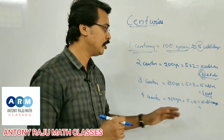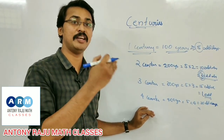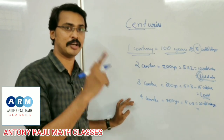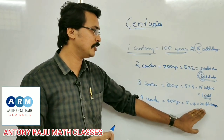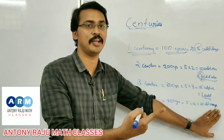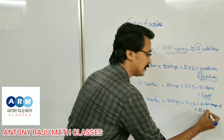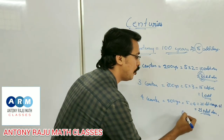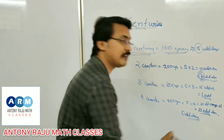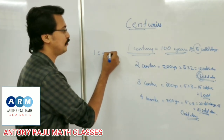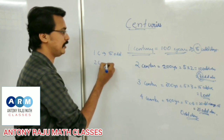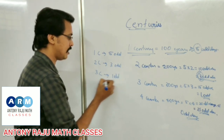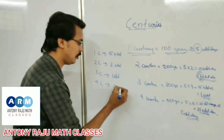For 400 years: 5 into 4 is 20 odd days, plus 1 extra day from the additional leap year gives 21 odd days. 21 is divisible by 7, so the remainder is 0. So we can conclude: 1 century = 5 odd days, 2 centuries = 3 odd days, 3 centuries = 1 odd day, 4 centuries = 0 odd days.